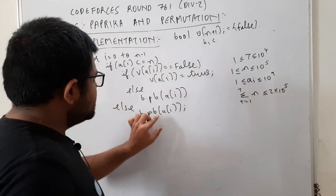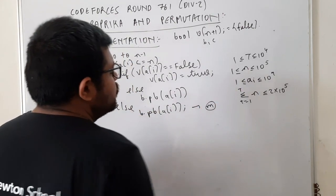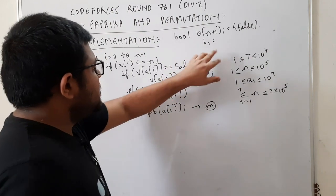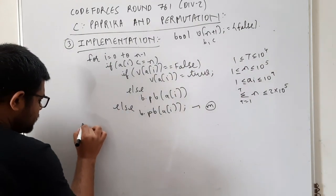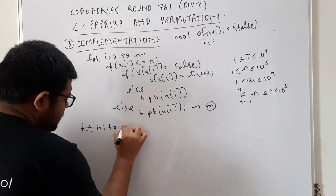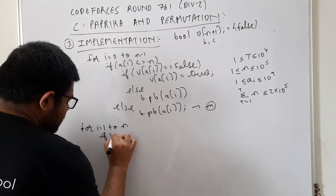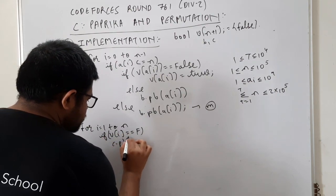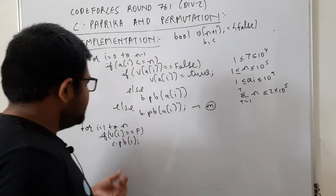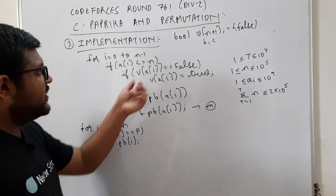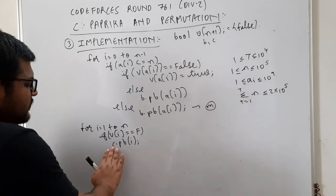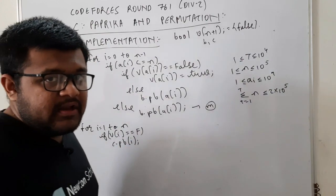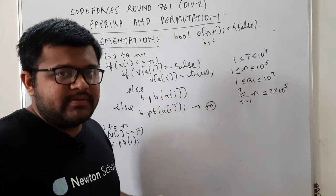अब C vector बनाते हैं: for i = 1 to N, if visited[i] == false, तो C.push_back(i)। C vector automatically sorted order में होगा क्योंकि हमने for loop 1 से N तक लगाया। अब B को C में convert करना है। B को sort कर देते हैं।